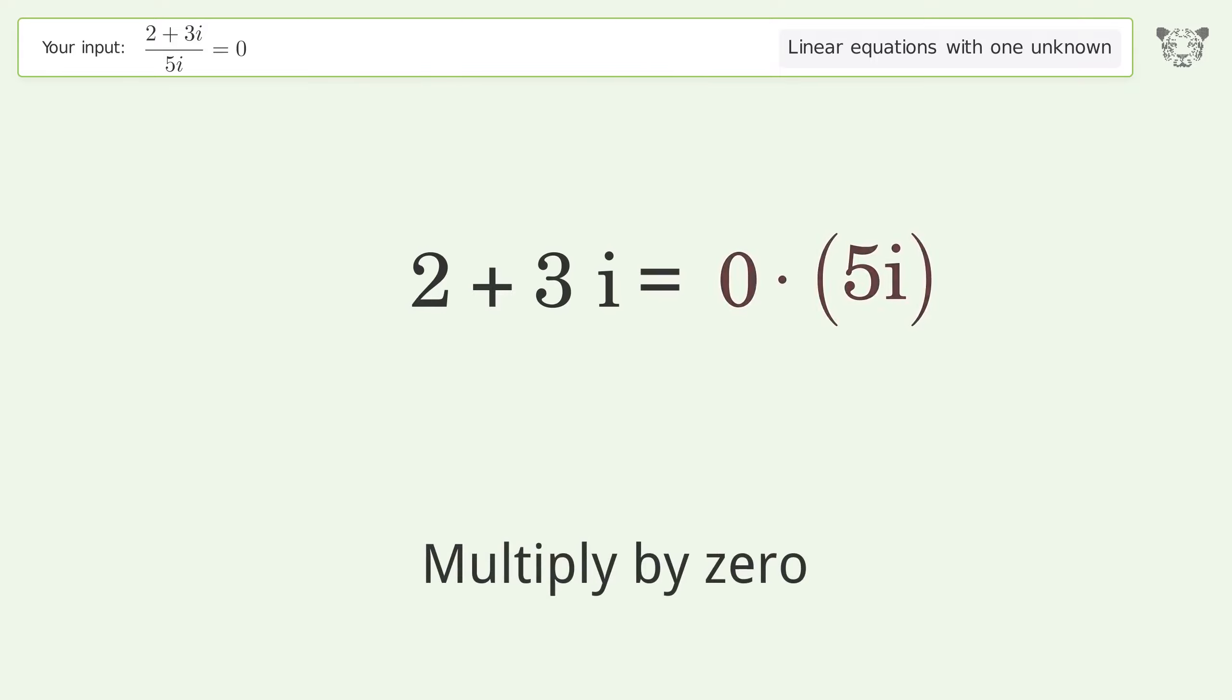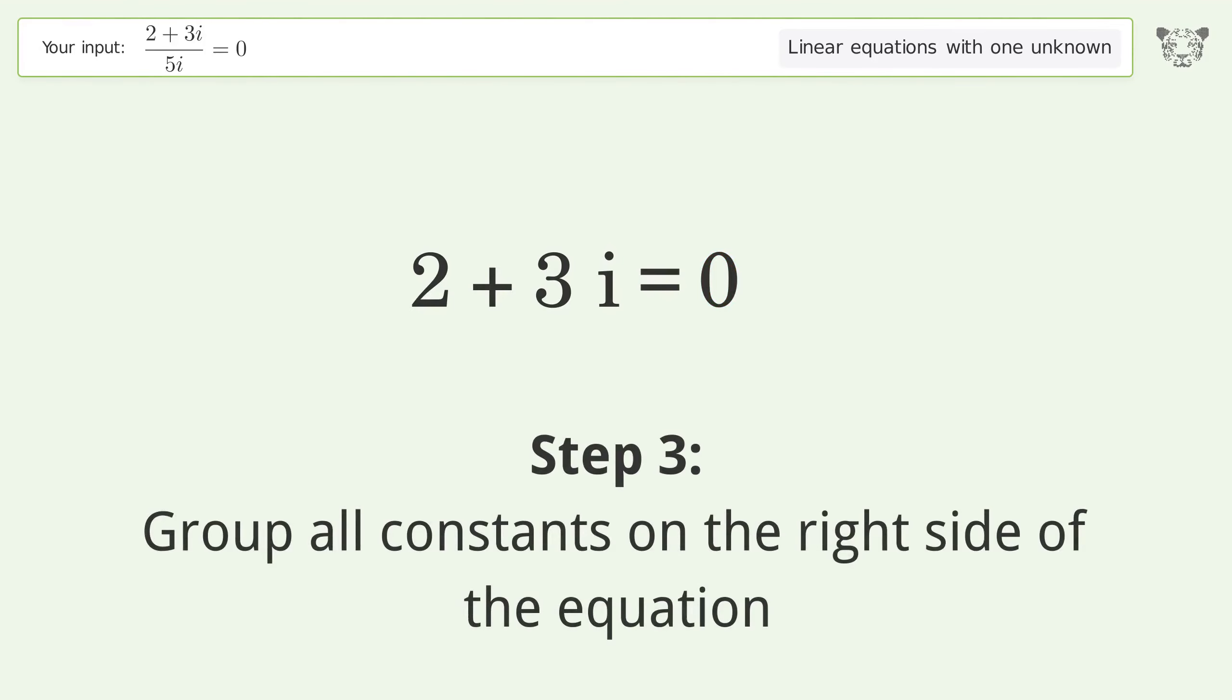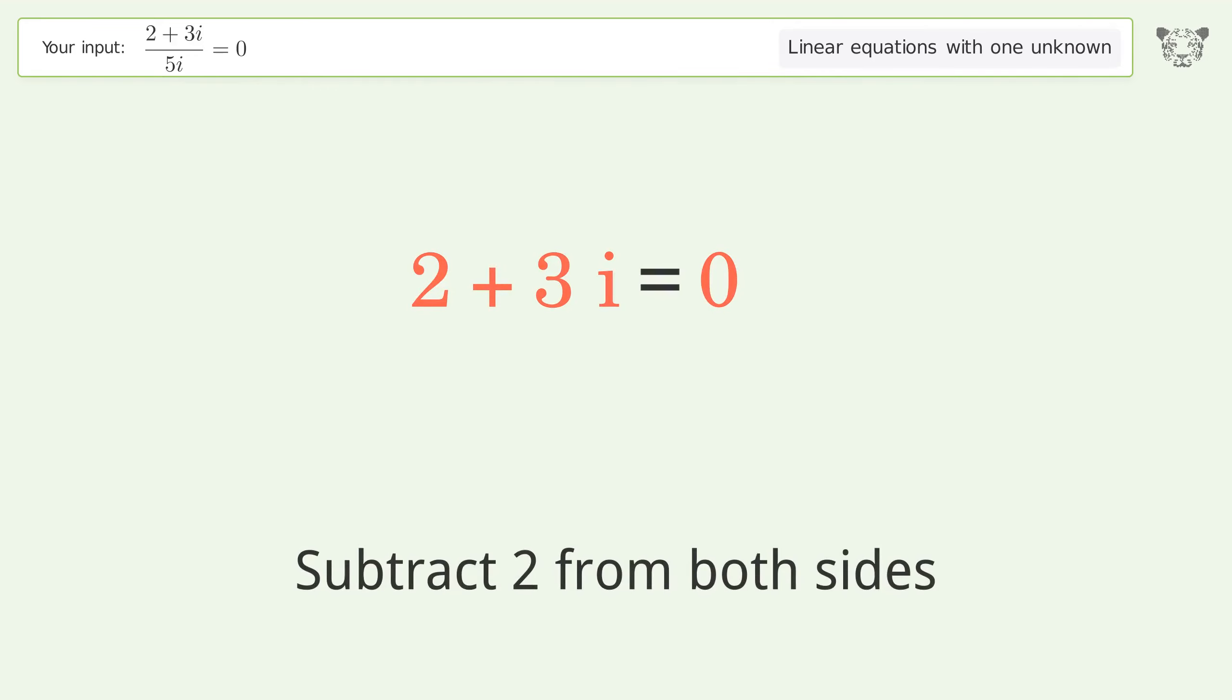Multiply by zero. Group all constants on the right side of the equation. Subtract 2 from both sides.